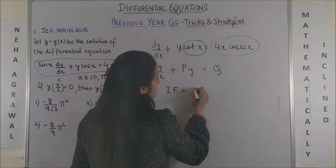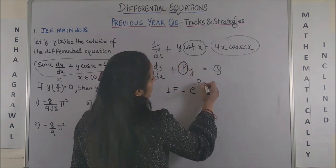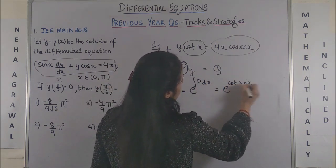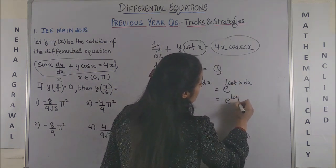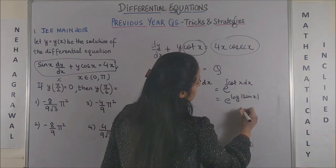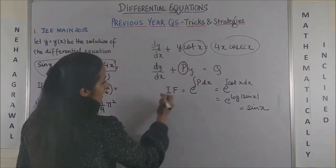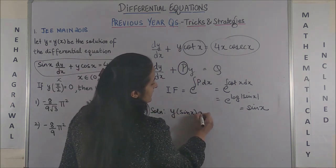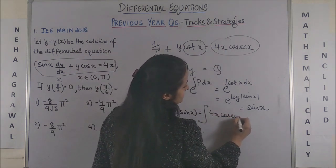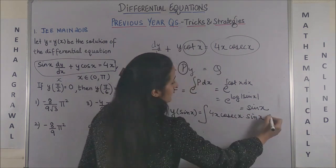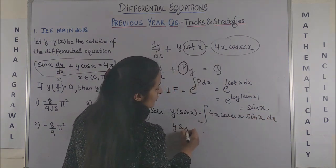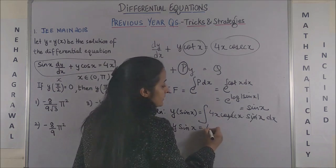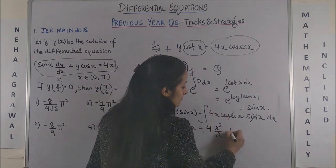This resembles dy/dx plus Py = Q, where P = cot x and Q = 4x·cosec x. The integrating factor is e raised to power of the integral of cot x dx, which is e raised to power log|sin x| = sin x. So the solution is y·sin x = integral of 4x·cosec x·sin x dx. Since cosec x and sin x are reciprocals, they cancel out, leaving integral of 4x dx = 2x² plus C.